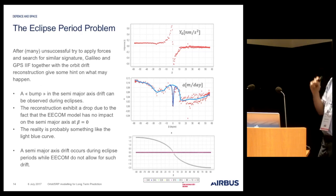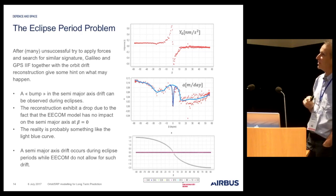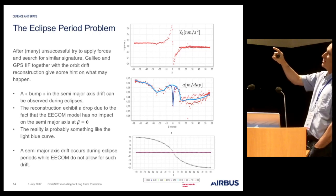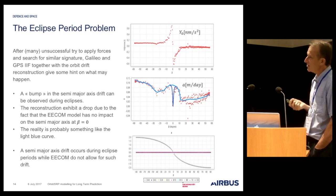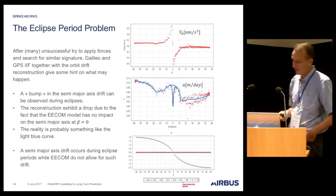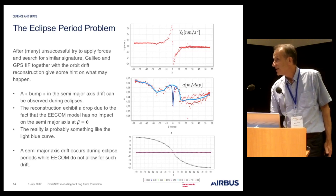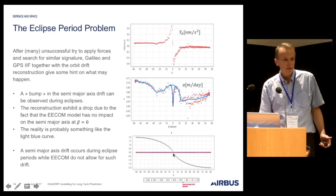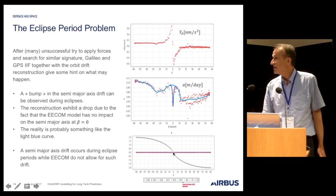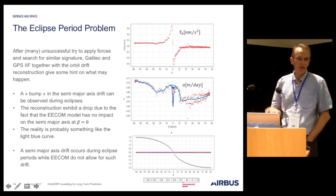I tried to model different forces and nothing really fits with what occurs. On the top curves you can see the Y0 coefficient with its exponential growth during eclipse. On the curve below, you see the reconstruction of the semi-major axis drift per day. You can see that when the sun crosses the plane, there is a drop of the dark blue curve. This is explained by the fact that the ECCOM parameter Y0 has no capacity to produce semi-major axis drift at beta equals zero.